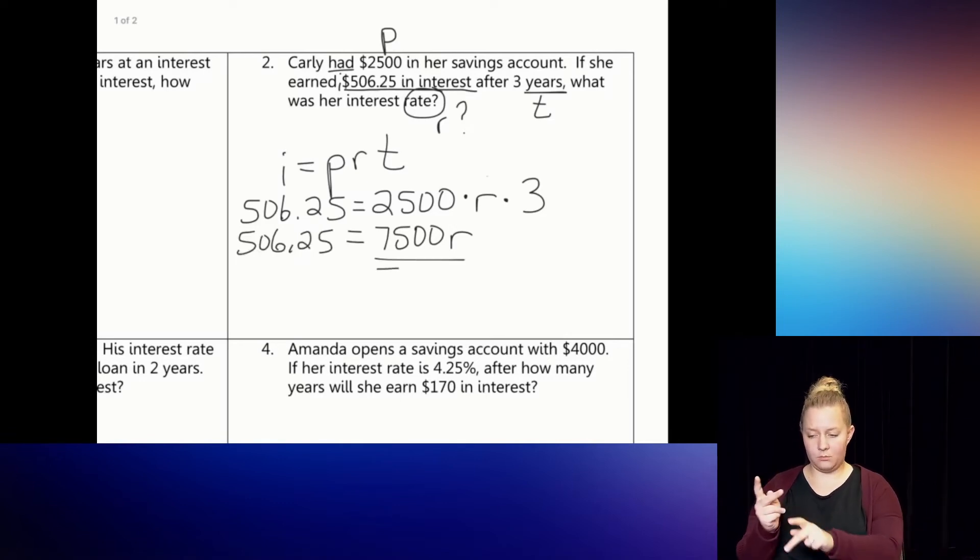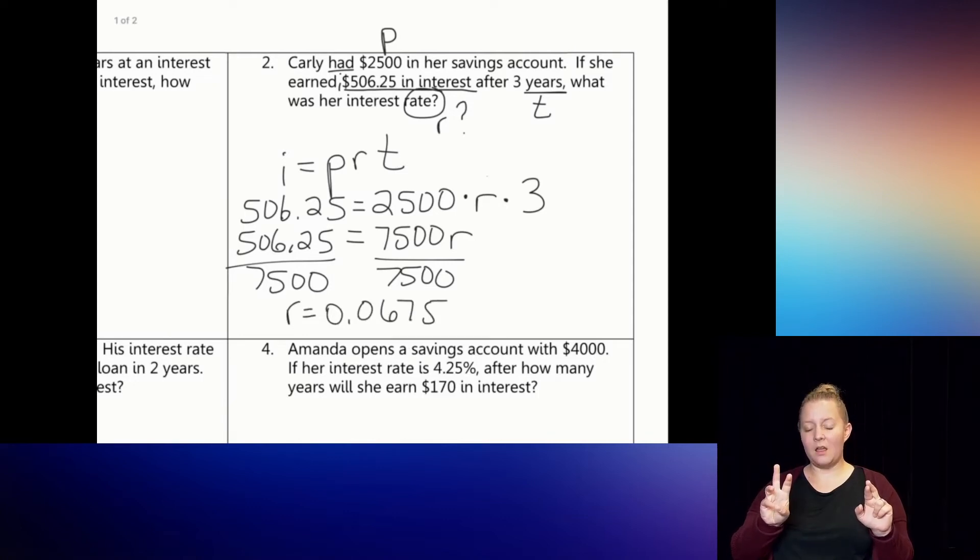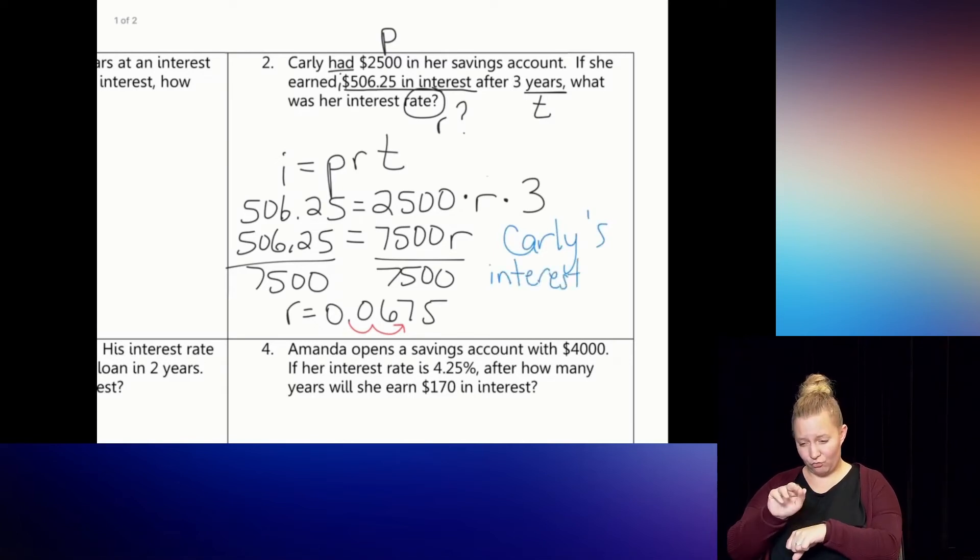The R is being multiplied by $7,500, so I'm going to divide both sides by $7,500. And when I type that in my calculator, I get 0.0675. Now that is a decimal. I want my rate to always be a percent. So I'm going to move that decimal two spaces to the right to make it a percent. And then my sentence will say, Carly's interest rate was 6.75%, or a little bit less than 7%.